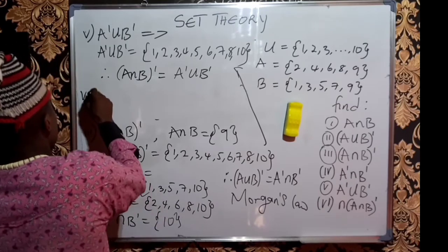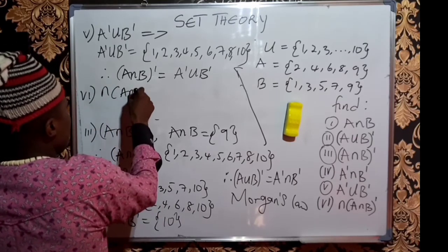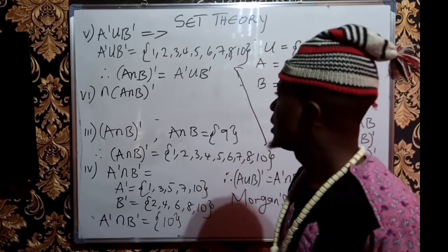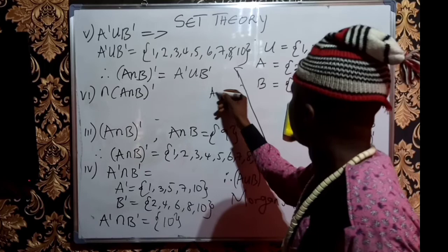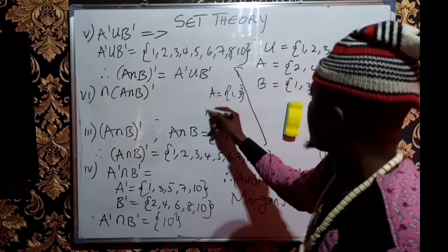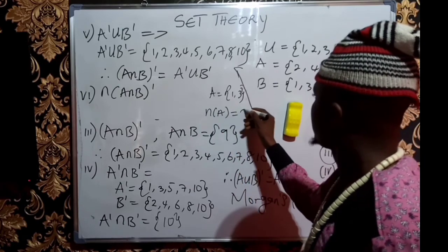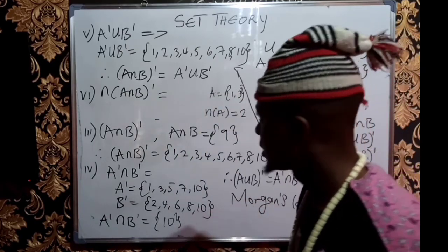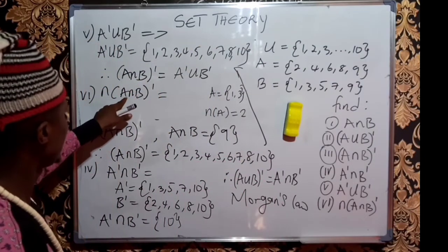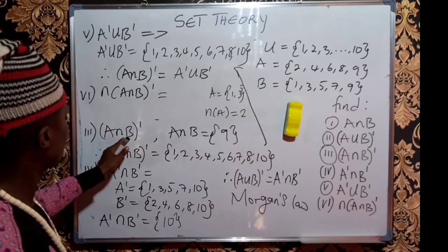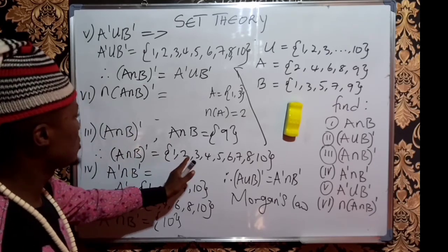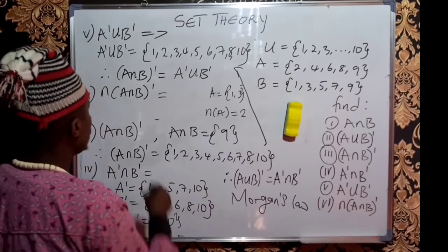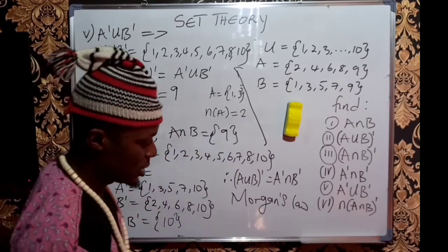Finally, we are asked to get the cardinality of (A ∩ B)'. Whenever you see N, it means the number of elements present in a particular set — the cardinality. For example, if set A equals {1, 3}, then N(A) is 2 because A contains two elements. A ∩ B' was found as {1, 2, 3, 4, 5, 6, 7, 8, 10}. Counting those elements: there are 9 members. So the cardinality of the set is 9.